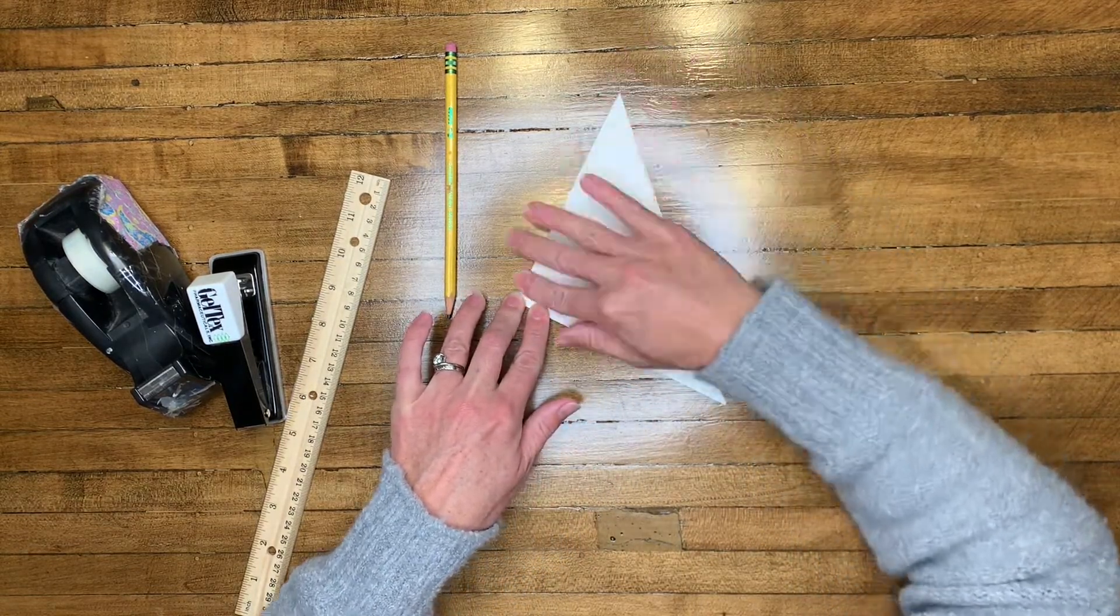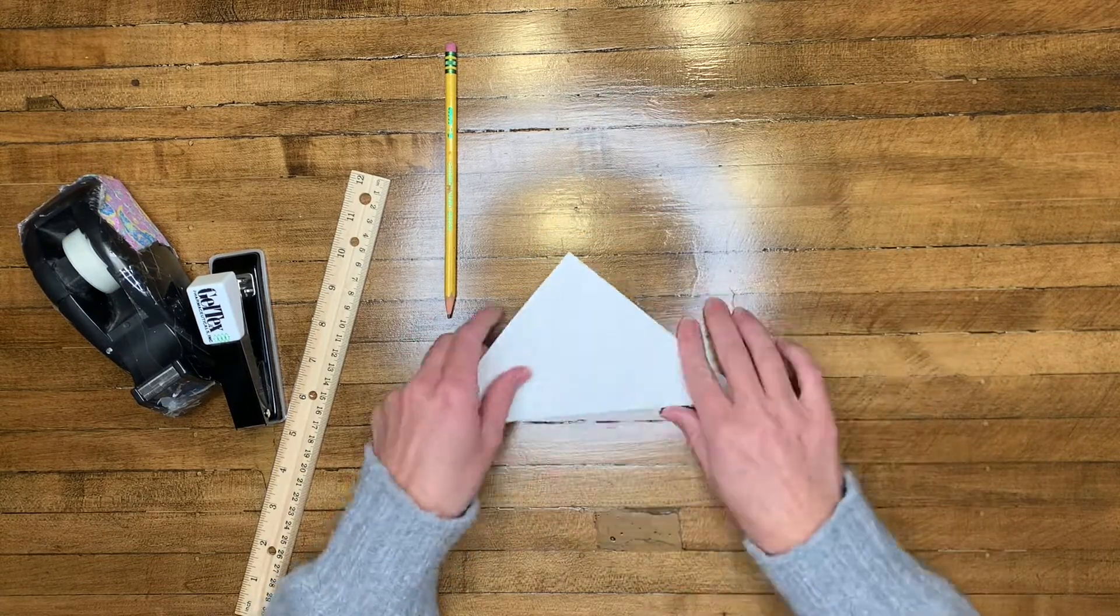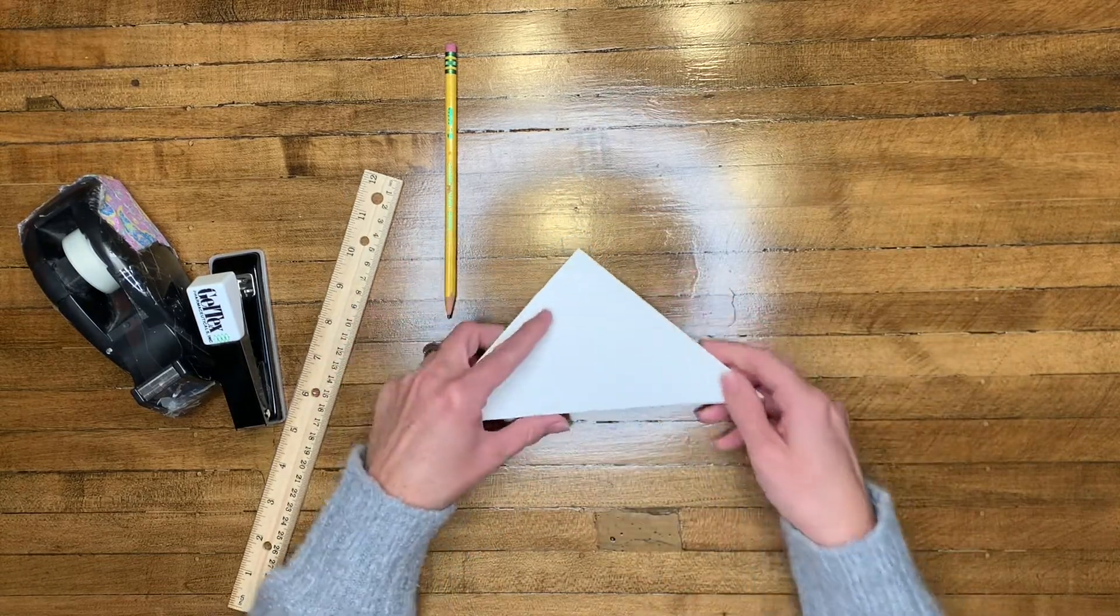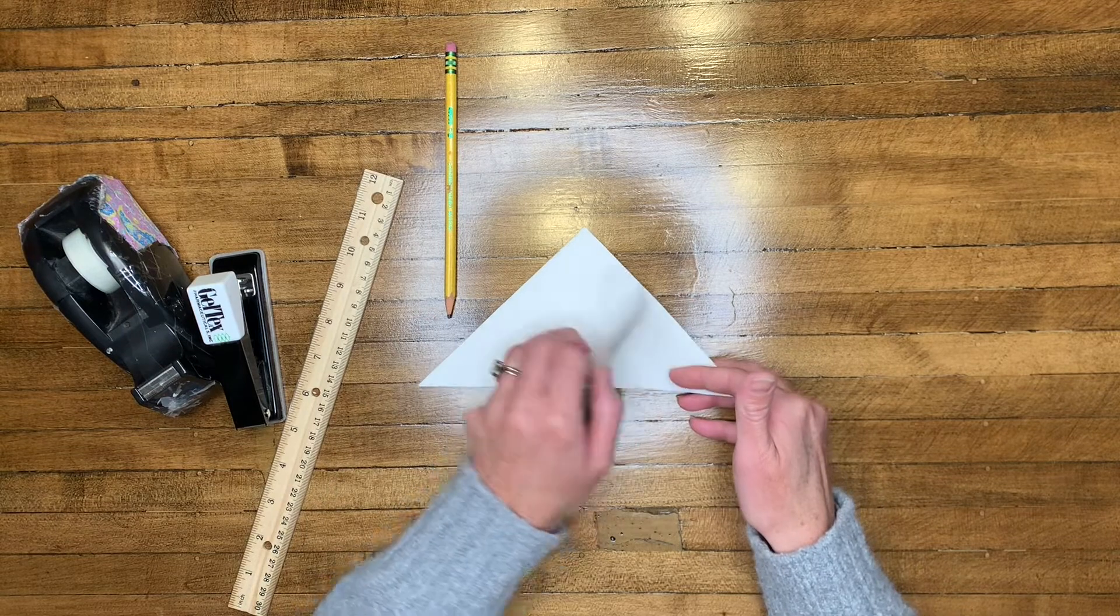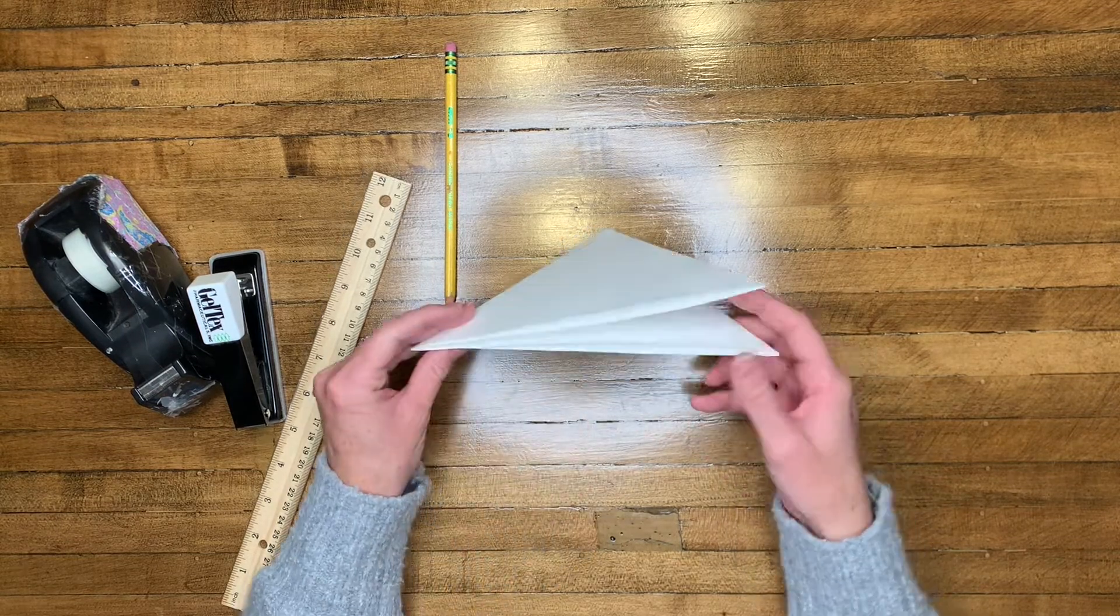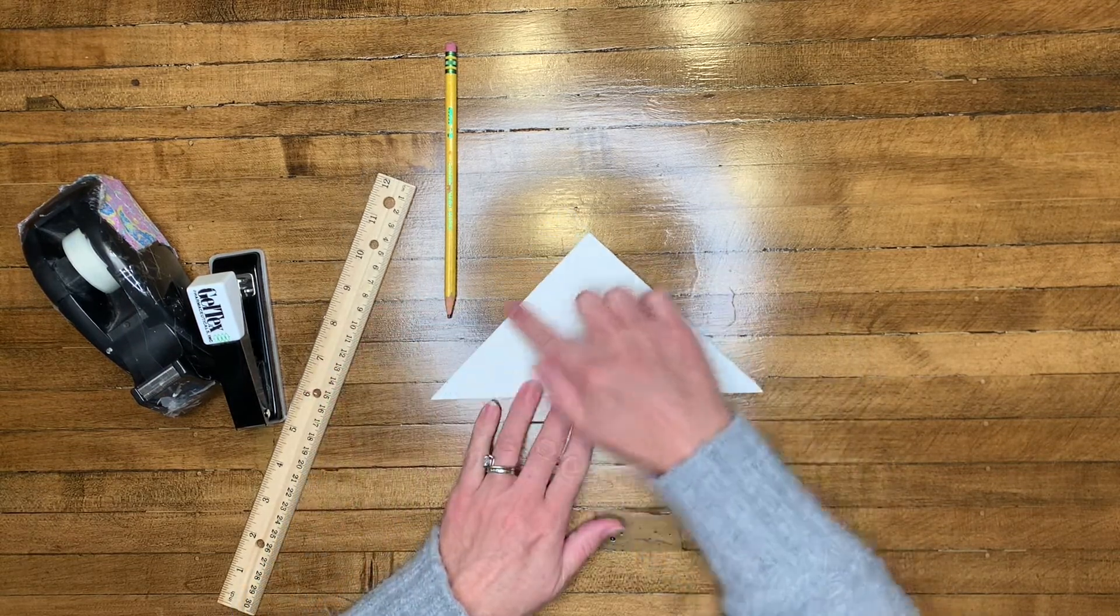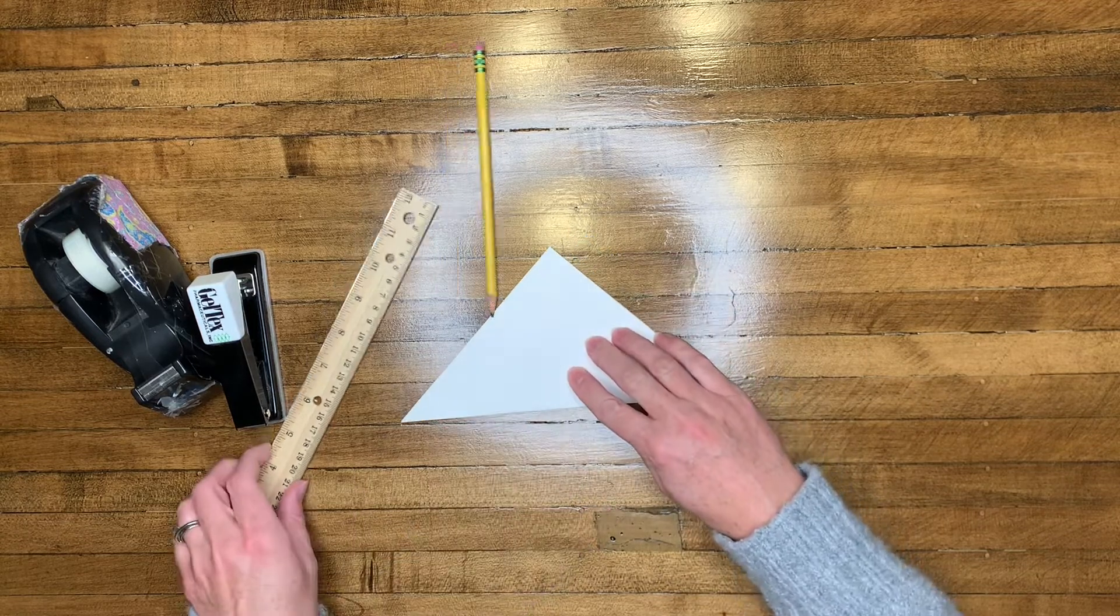Now you want to make sure that you're turning your paper so that you have a fold on the left side, the open flap on the right side, and that's really, really important.